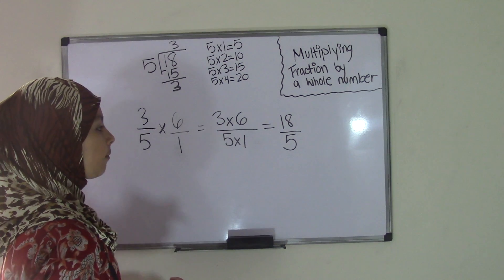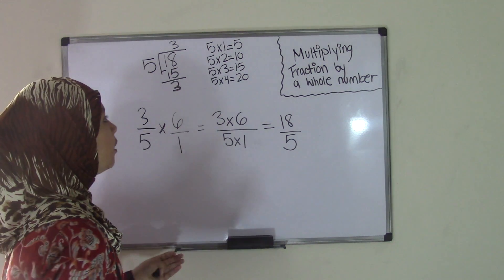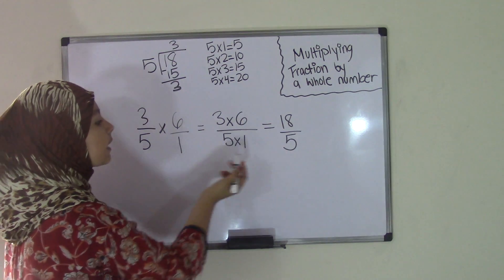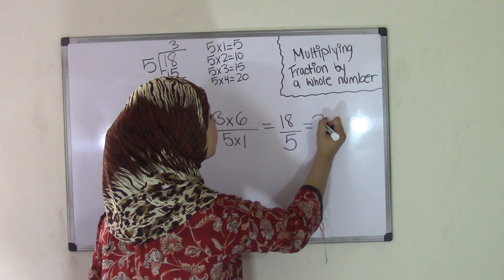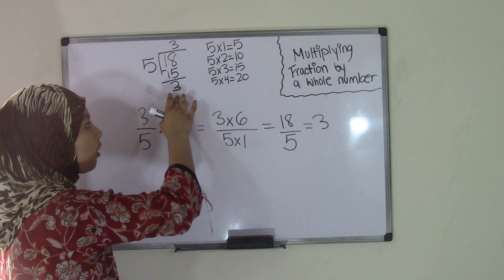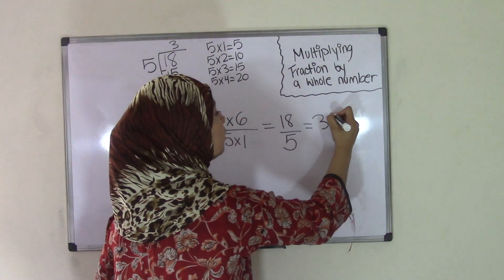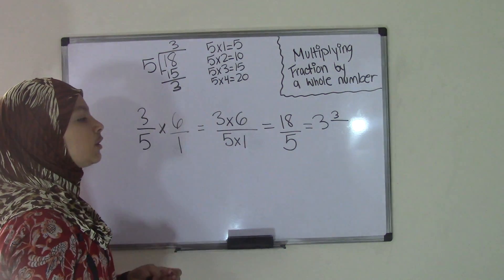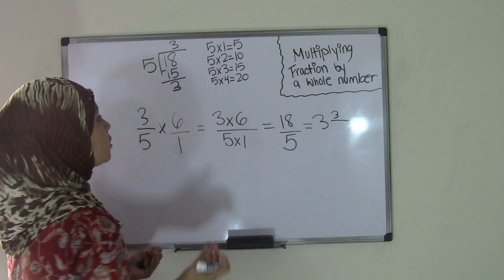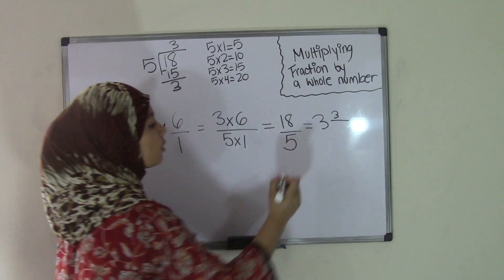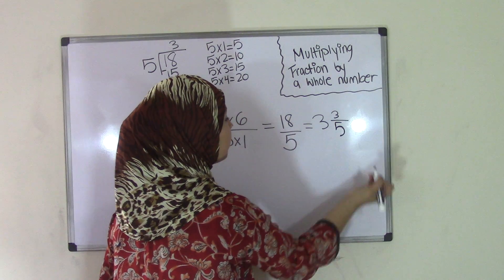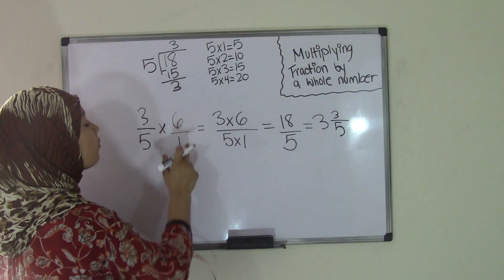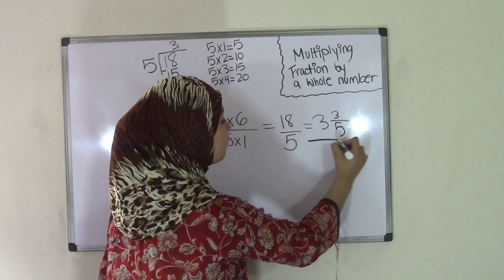So now you have your quotient, but how do you make this into a mixed number? Well, here's the thing. The quotient, which is 3 in this case, will become your whole number. Your remainder, which is also 3, will become your numerator. So that will go on top. Now your denominator is going to be your divisor, and a divisor is a number that you divide by. So in this case, 5 is our divisor, so we have 5 as our denominator. So that means the product for 3 over 5 times 6 over 1 equals 3 and 3 fifths.